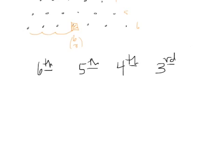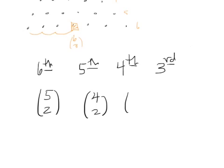Well, I have to have picked two people from among the first five. And how many ways do I pick the fifth person to be the third person to be a member of the committee? Well, I have to have picked exactly two people from the first four. And so on.